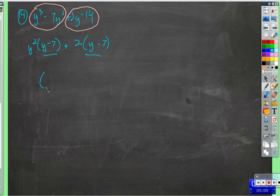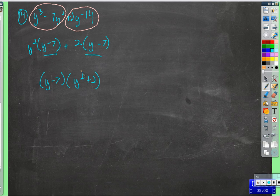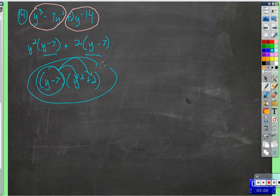Then we look at the second group — these two have a 2 in common, giving 2 times y minus 7. Now it just so happens these binomial factors are identical. So we factor out the y minus 7 just like any other factor: we get y minus 7 times y squared plus 2. Distributing y minus 7 back gives us the original expression. That's the factored form.